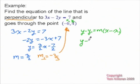So we'll get y minus 4 equals negative 2 thirds times x minus negative 6, which would make it a plus 6.